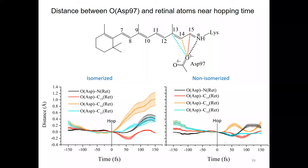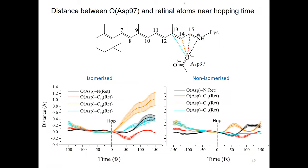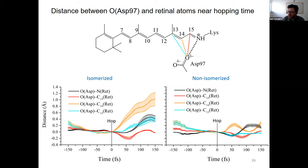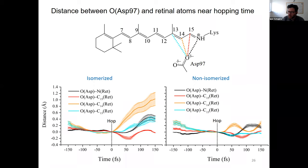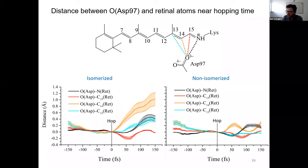A follow-up question: if you change to a polarization model, do you think the percentage of cis-trans isomerization will change? We would need to do the simulation to give a definitive answer. But at the current stage, I don't think it would change it. The reason is because the distance from the counterion is between two and three angstroms — at such a range, what matters is mainly the negative charge it carries. So I think the polarization effect at this range will probably be minor.